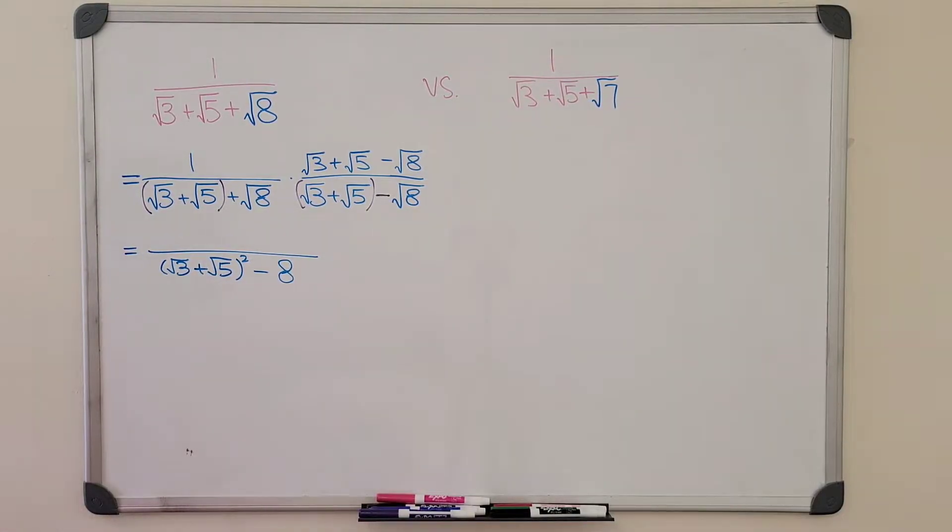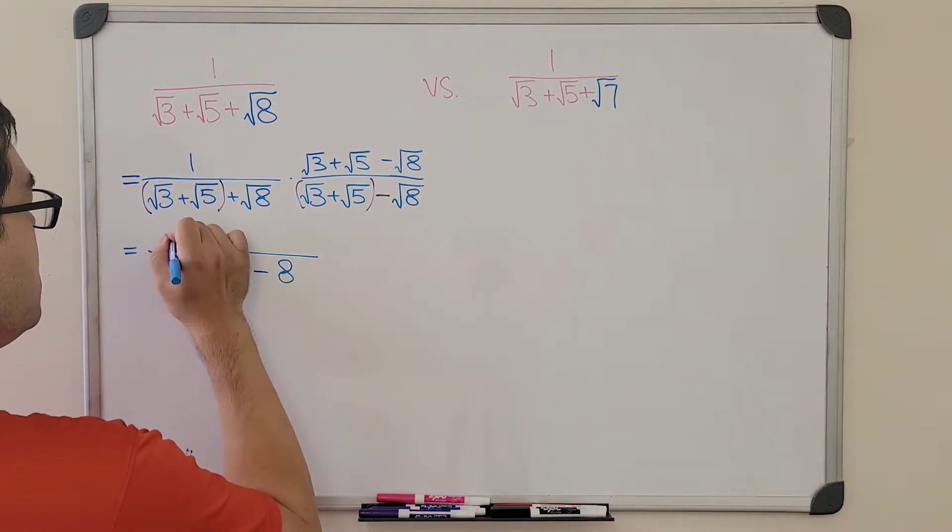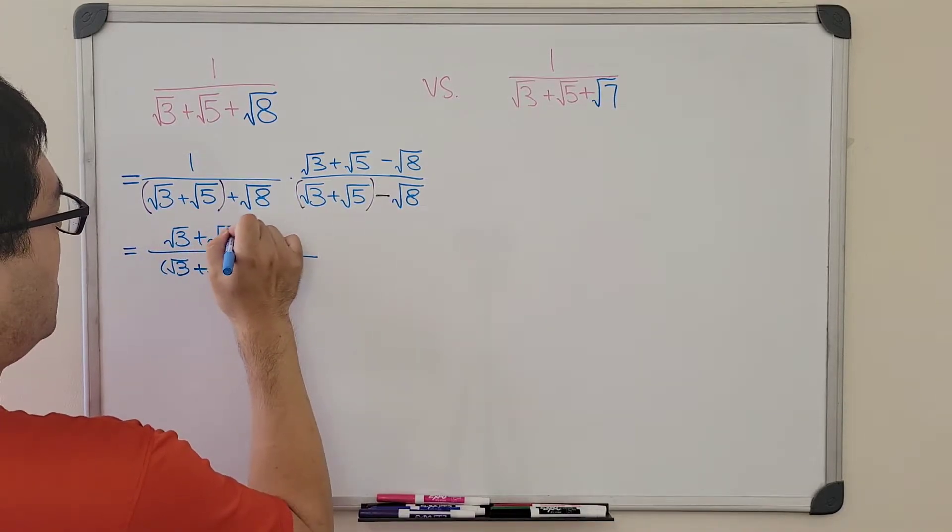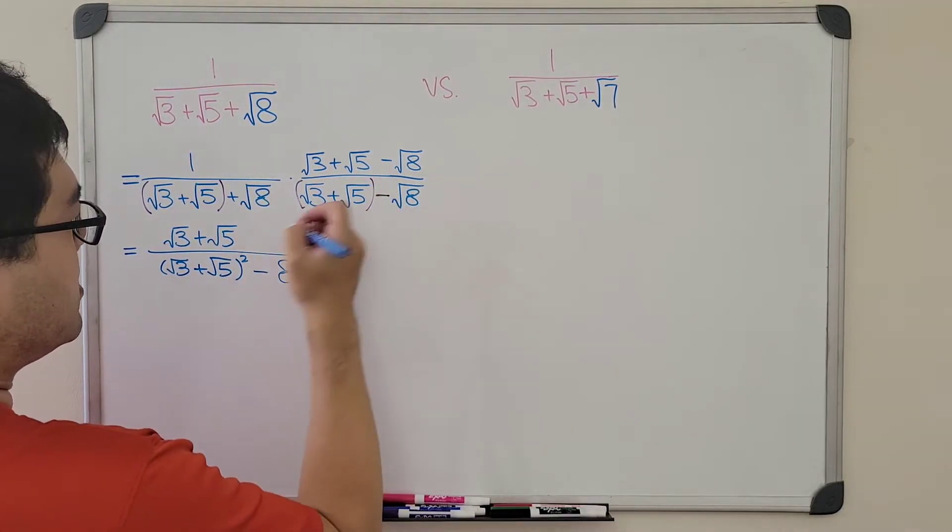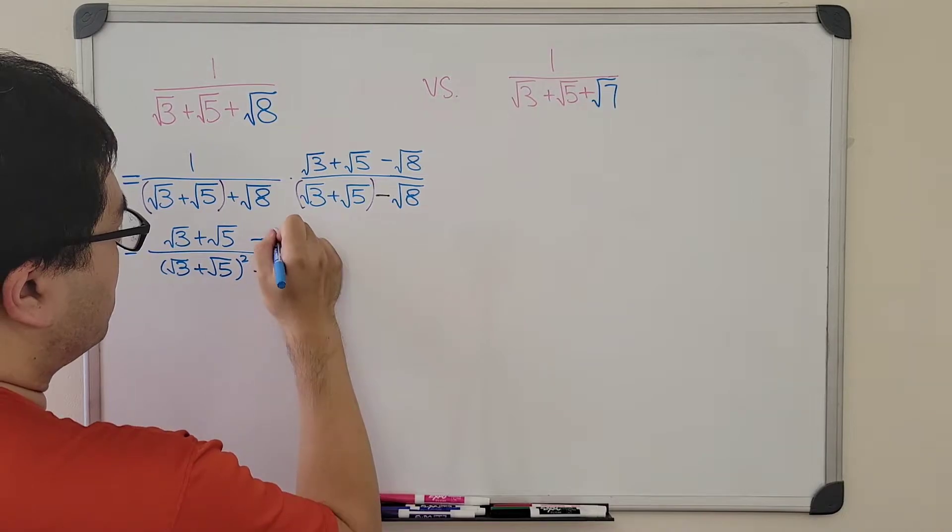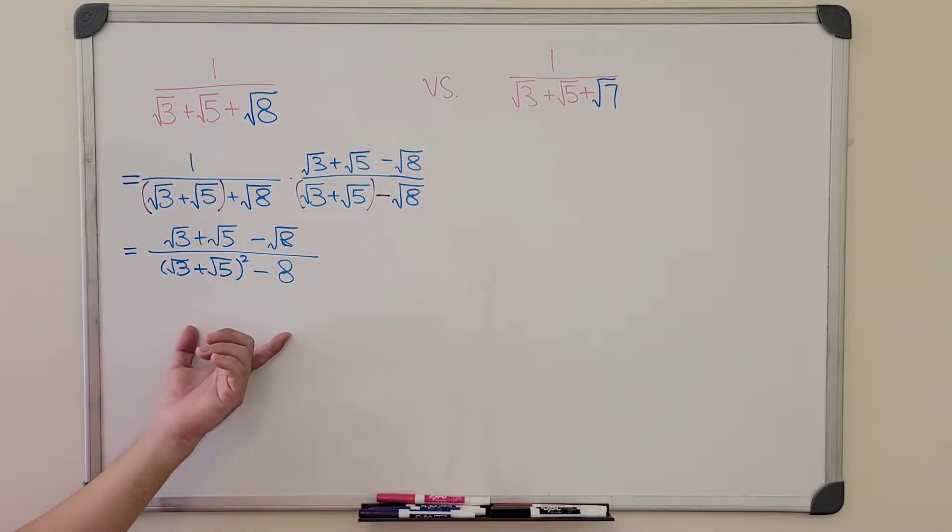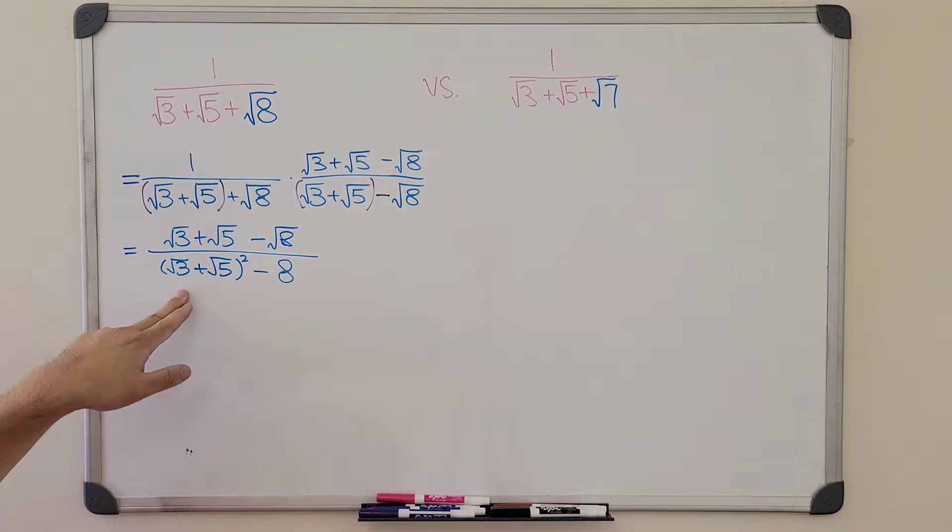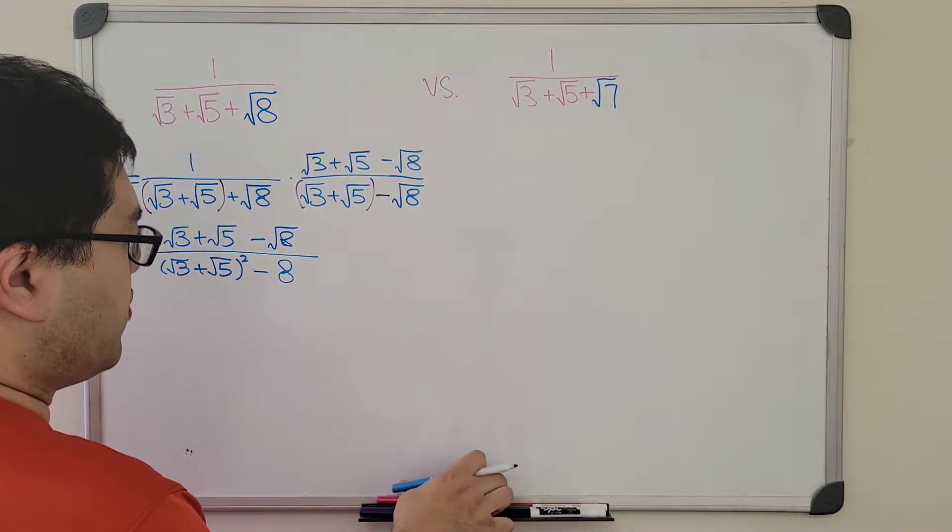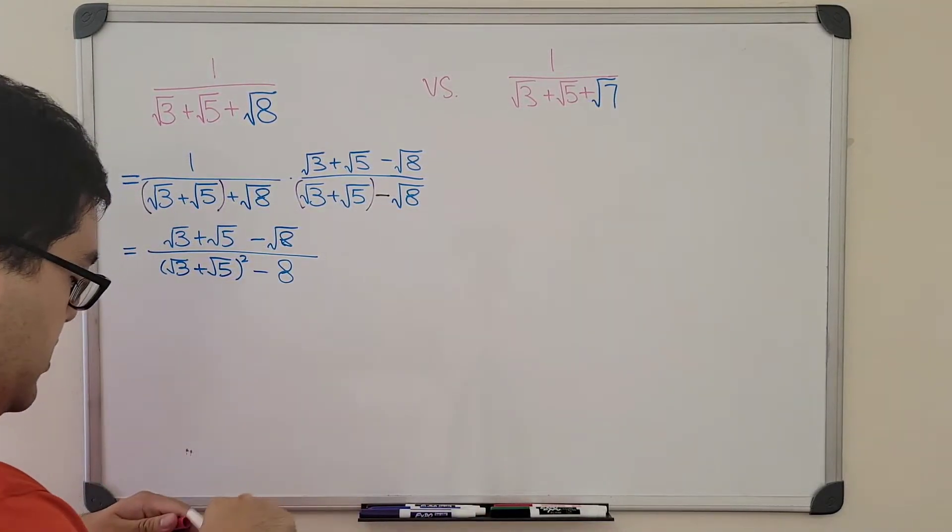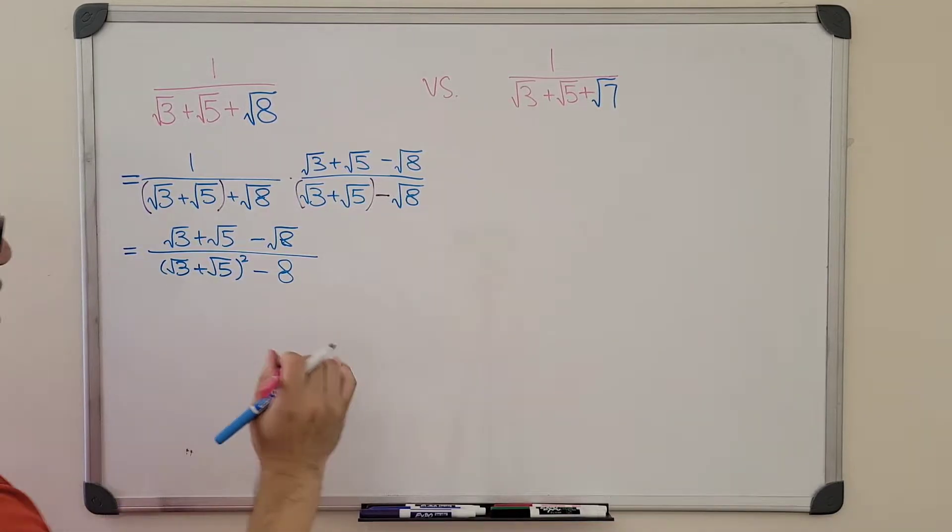The radical and the square cancels with each other. So on top, we just have this term above. Now, why is this helpful? Now we have the square of sum. So let's simplify that part.